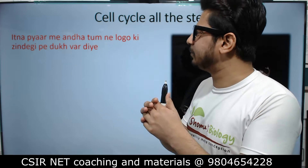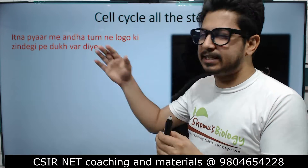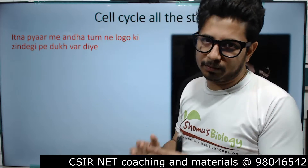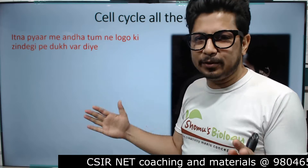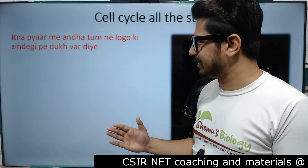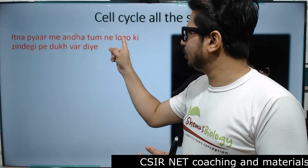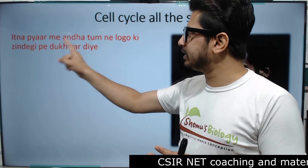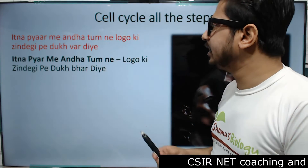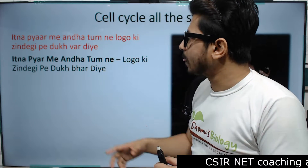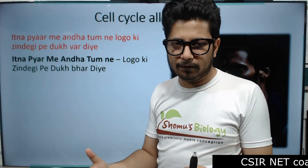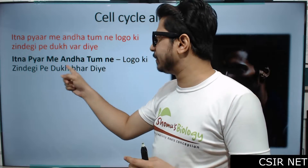The sentence you need to remember is: 'Itna pyaar mein andha tunne logo ki zindagi pe dukh bhar diye.' If you remember this particular sentence, you will know every single step of the cell cycle — every little detail of the cell cycle phases. This sentence has two components: 'Itna pyaar mein andha tunne' covers the first series of cell cycle steps, and then 'logo ki zindagi pe dukh bhar diye' covers the next.